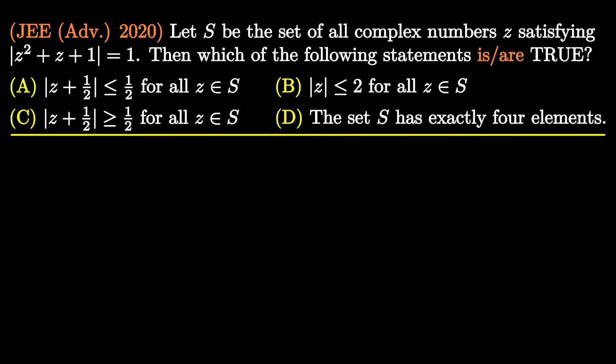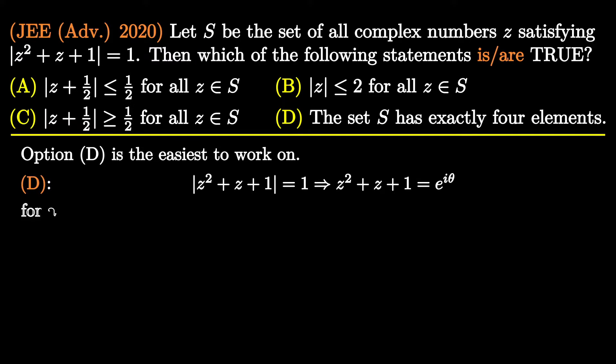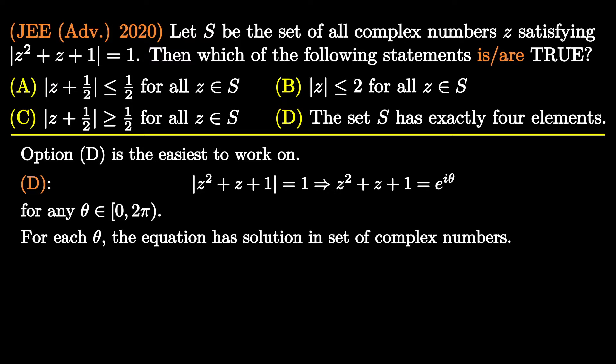The fourth option is the easiest to work on. We observe that the possible values of z² + z + 1 are e^(iθ) where θ lies in the interval [0, 2π]. For each possible value of θ, we get a quadratic equation in z, and each such equation has a solution in the set of complex numbers. So there are infinitely many possible values of z satisfying the given condition. This makes option D incorrect.